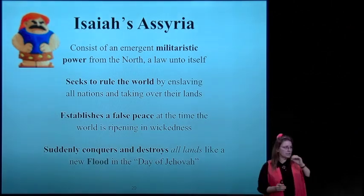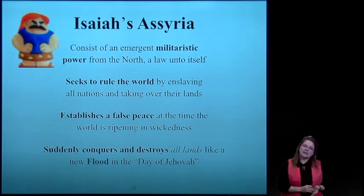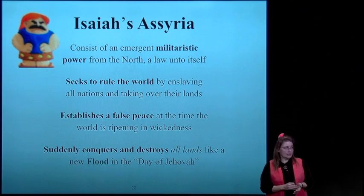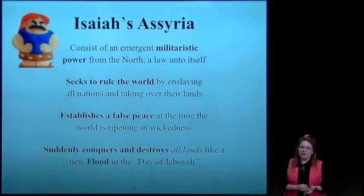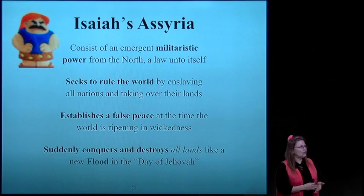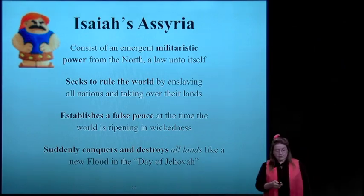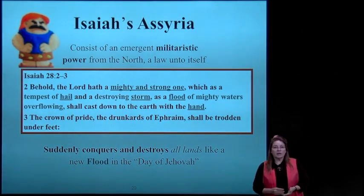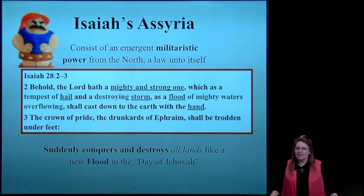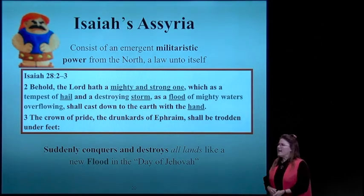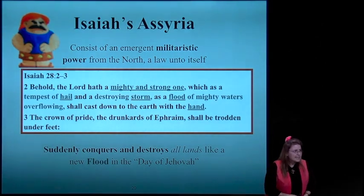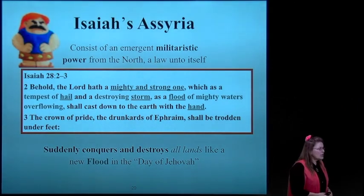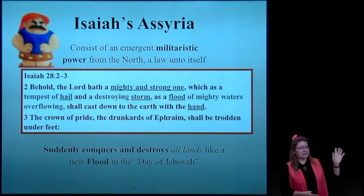Each of these comes from different verses in Isaiah. He establishes a false peace at the time when the world is ripening in wickedness. And he suddenly conquers and destroys all lands like a new flood in the day of Jehovah—the day of the Lord. In Isaiah 28 verses 2 and 3: 'Behold, the Lord has a mighty and strong one, which as a tempest of hail and a destroying storm, as a flood of mighty waters overflowing, shall cast down to the earth with the hand.'